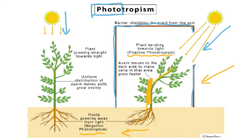So towards light is positive phototropism — shoots are positively phototropic. Roots will grow away from light, so they are showing negative phototropism.